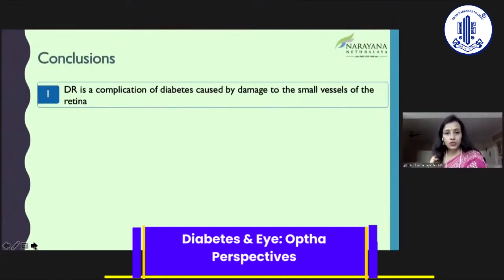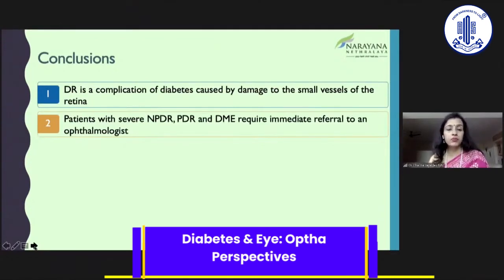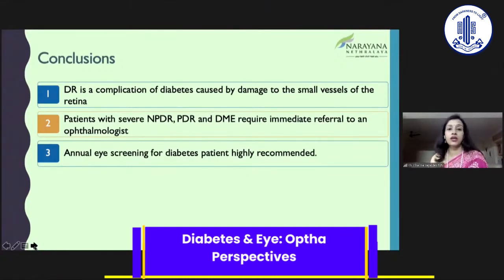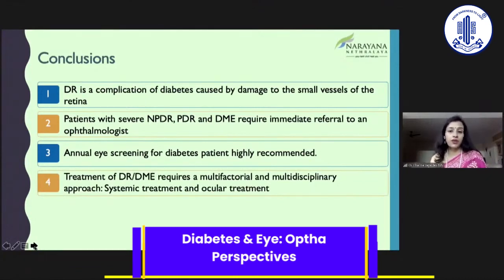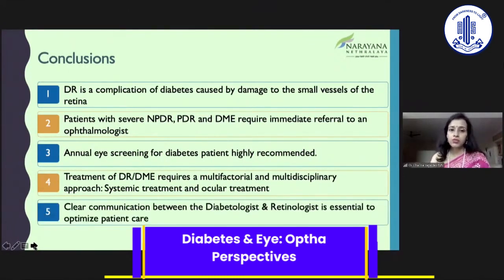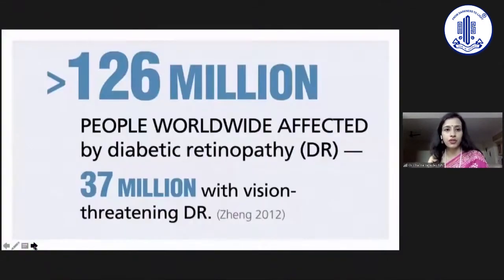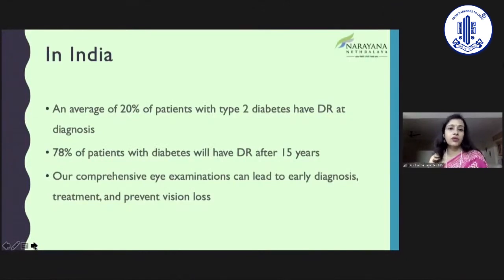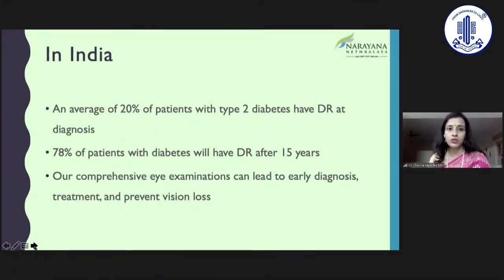To conclude, DR is a complication of diabetes caused by damage to small blood vessels. Patients with severe NPDR, PDR, or DME require immediate referral to an ophthalmologist, and annual eye screening for diabetic patients is highly recommended. Treatment of DR and DME requires a multifactorial, multidisciplinary approach — clear communication between diabetologist and retinologist is essential for optimal patient care. We have 126 million people worldwide affected by diabetic retinopathy, and 37 million as of 2012 had vision-threatening DR. In India, an average 20% of patients with type 2 diabetes have some form of the disease, and 78% will have diabetes-related retinal changes after 15 years. A comprehensive eye examination can lead to early diagnosis, treatment, and prevention of vision loss.